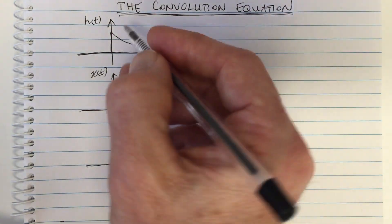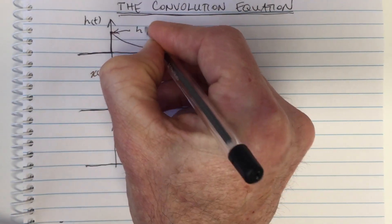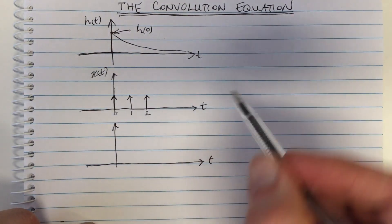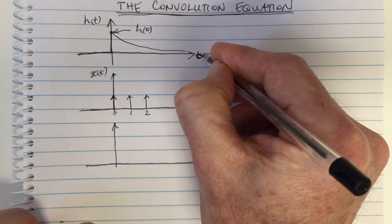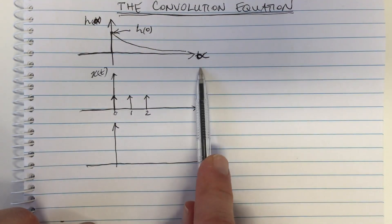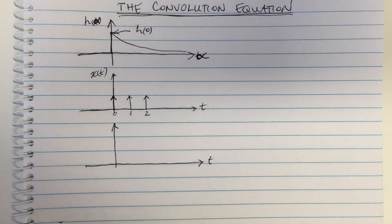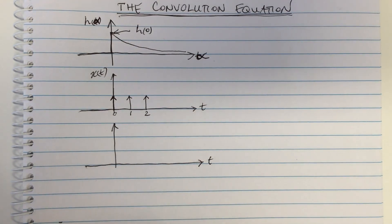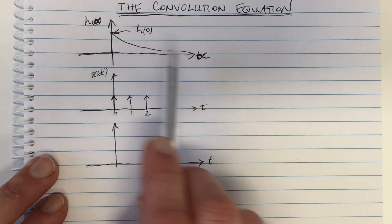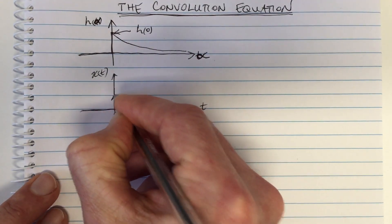Let me make the point that this value here — this height — is h of zero. Also note that this is a function, and I can plot it with respect to anything as long as I am consistent. So this is h of alpha plotted with respect to alpha, just as it was h of t plotted with respect to t. You can change the variable you plot against with no problem. Changing the variable doesn't change the shape of the function.